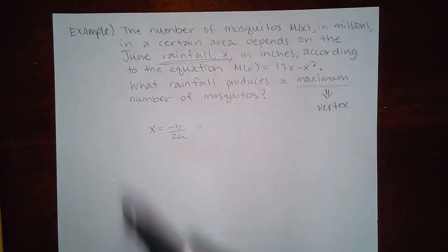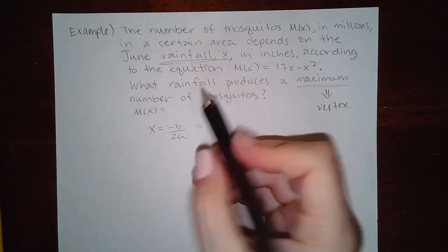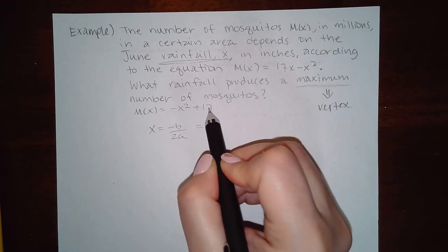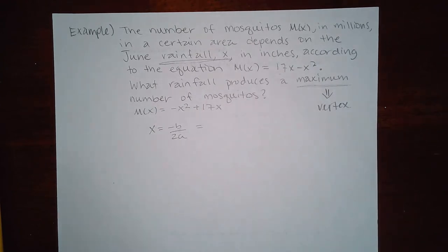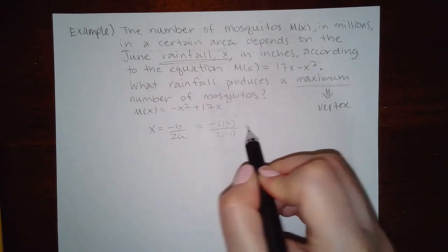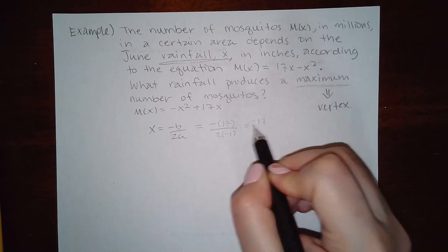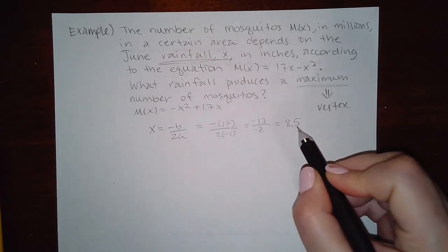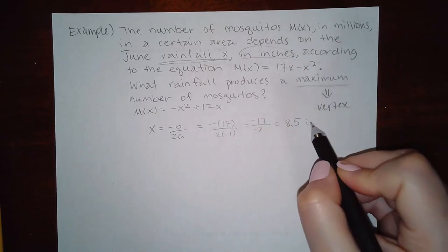So x equals negative b over 2a. And in this case, be careful: b is the coefficient of x, so it's actually this guy. This is not in its correct form, actually. So M(x), if I want to put it in the correct order, should have the negative x squared in front and then the positive 17x behind it. So b is a positive 17, and a is a negative 1. So we get negative 17 over negative 2, which is 8.5 positive. So it says what rainfall produces the maximum number of mosquitoes? It would be 8.5 inches.